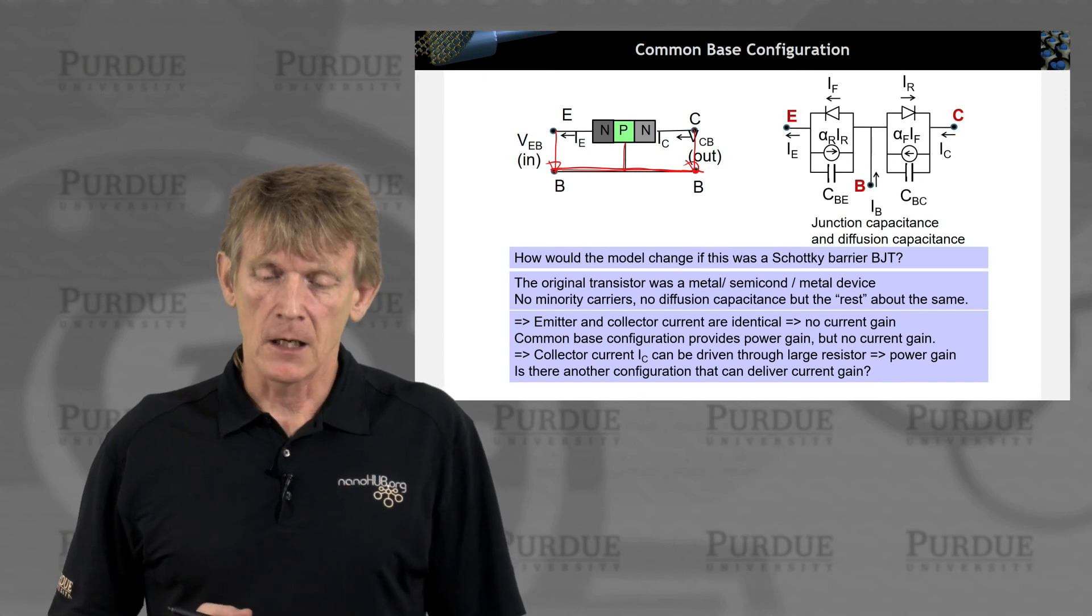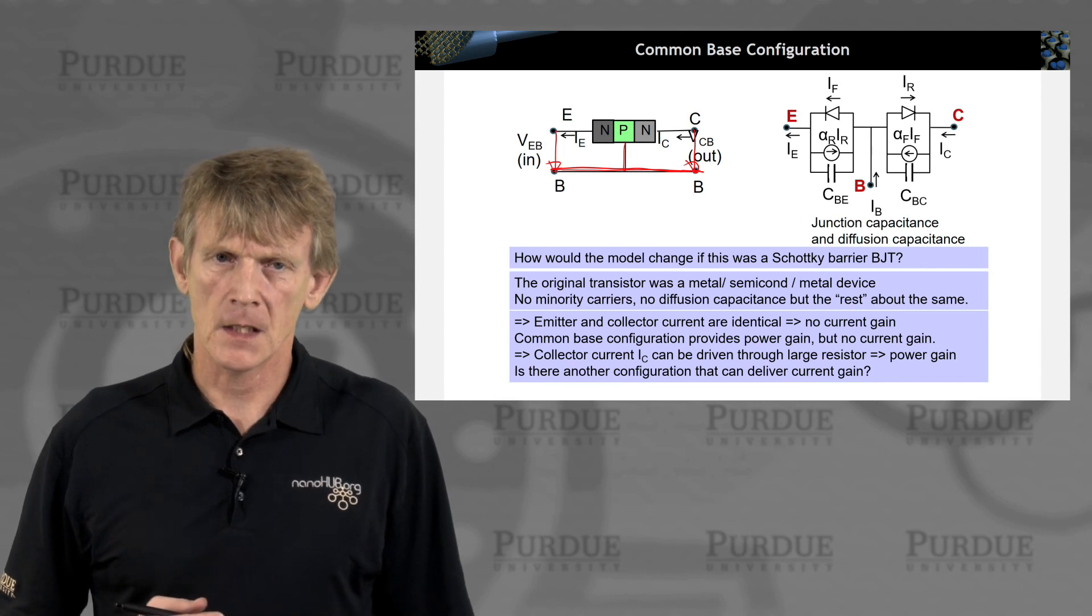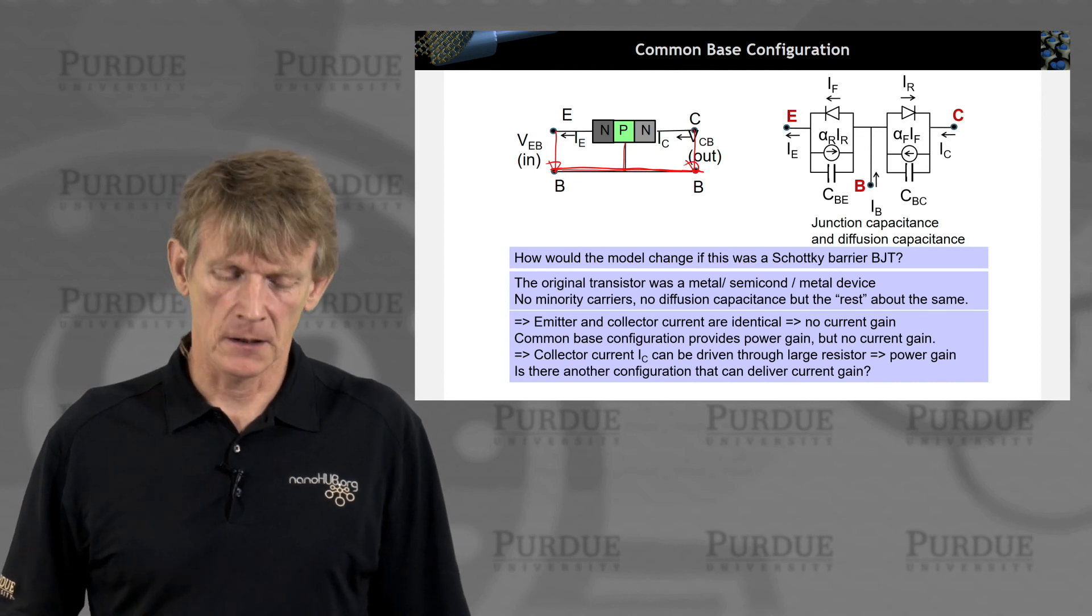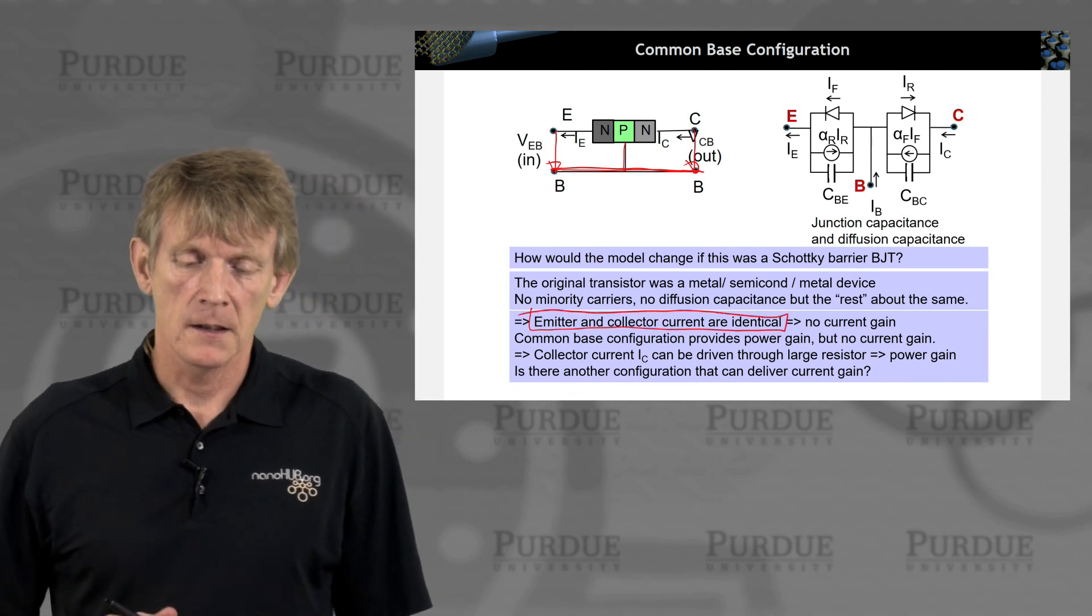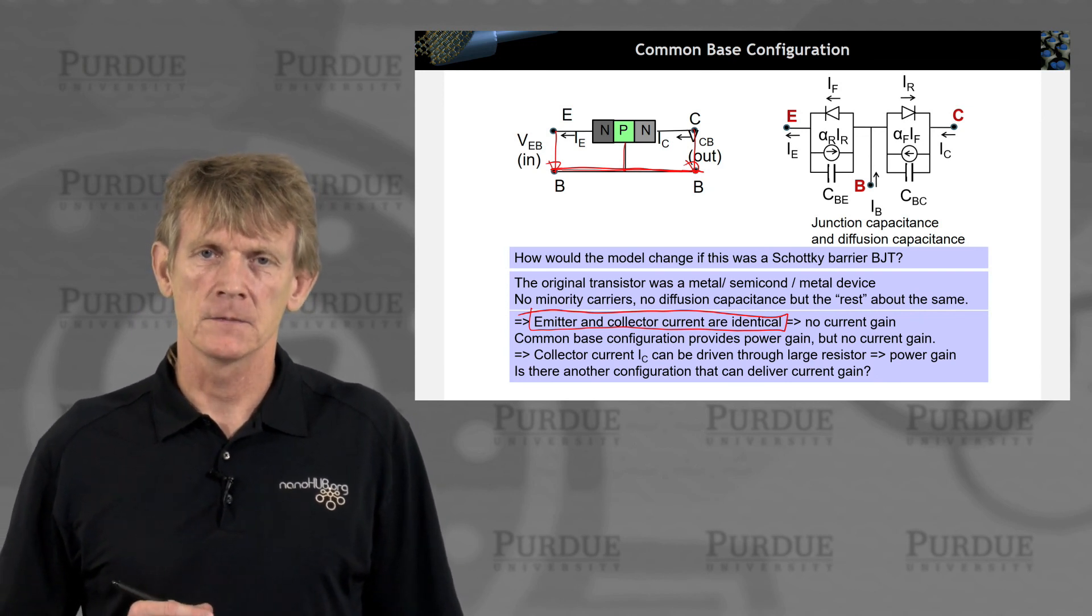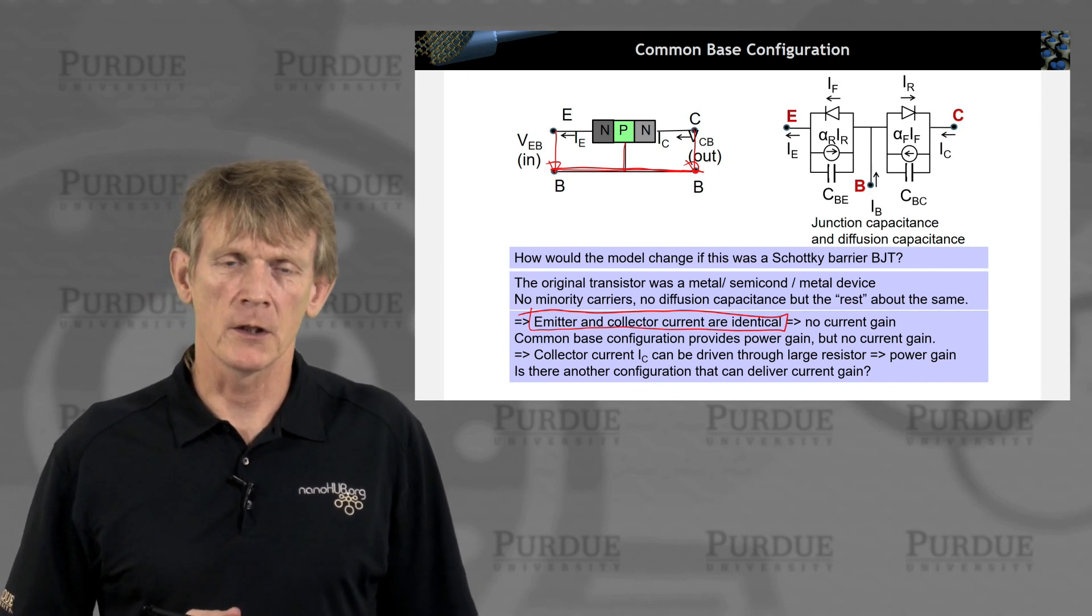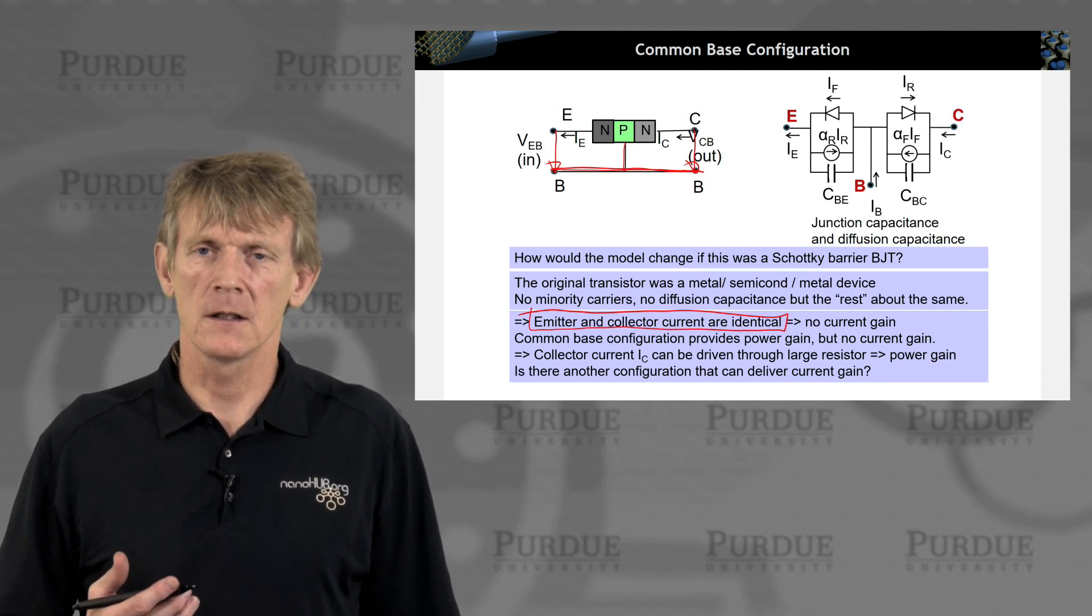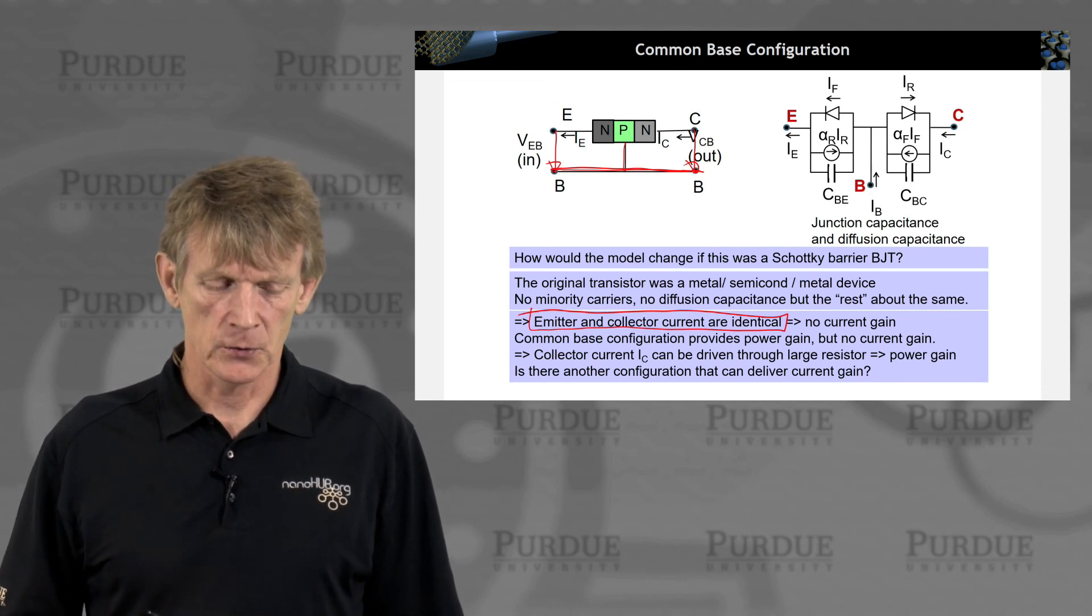Now look at this configuration. If I have a common base, and I have virtually no base current, that means the emitter and collector current are identical. So if you wanted to amplify current, this may not be the best configuration, right? I had motivated some of this by saying you want to regulate with little input, regulate a big flow. But you wouldn't amplify the current that is flowing. So you don't have current gain.